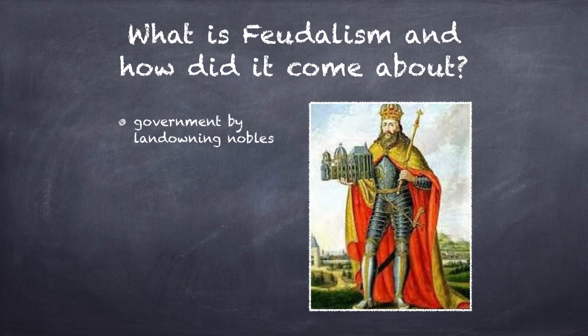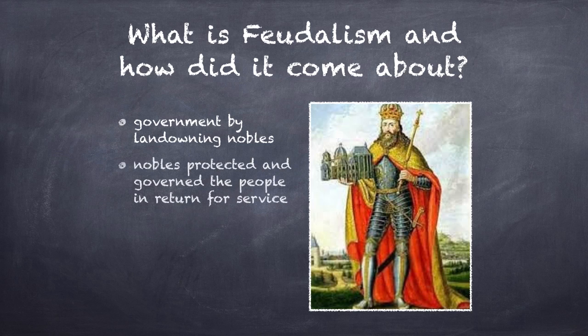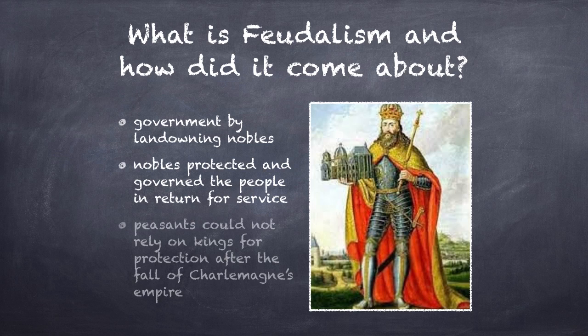Let's come up with a definition. The definition for feudalism is very simple: it's government by land-owning nobles. That means that nobles protected and governed the people in return for service. Those people they were protecting were called peasants.